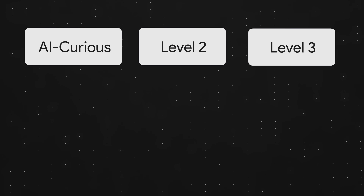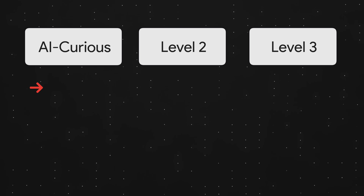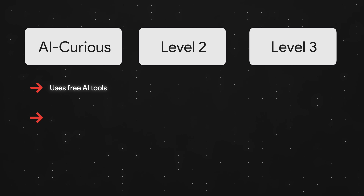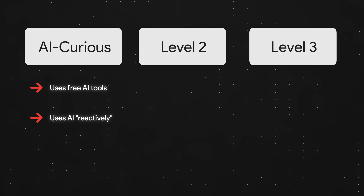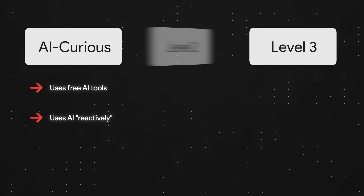Working with AI comes in roughly three levels. First, we have people who are AI curious. This group relies on the free tier of AI tools and only uses chatbots when someone reminds them to or when they're stuck.